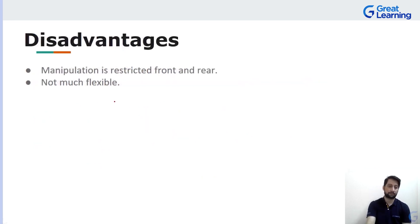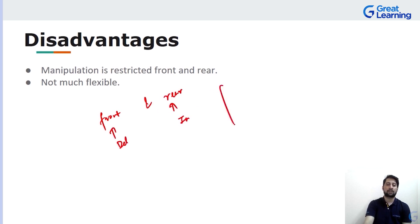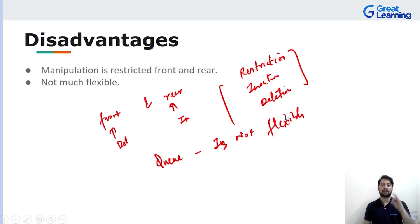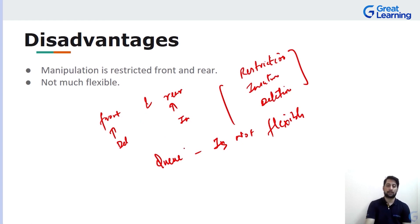The disadvantages of queue: since we can only delete from the front and insert from the rear, there is a restriction on insertion and any manipulation of elements. This restriction means the queue data structure is not very flexible — we can only delete and insert elements in a fixed FIFO pattern, which limits flexibility.